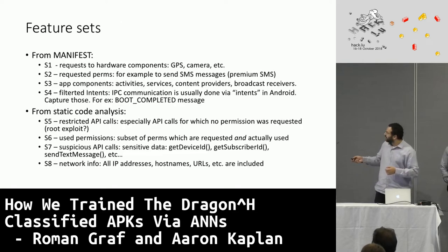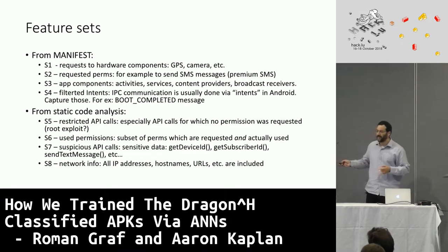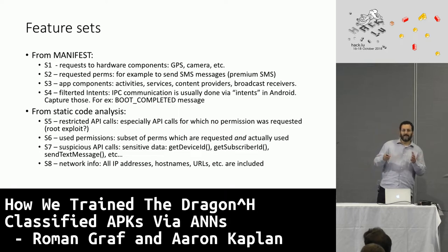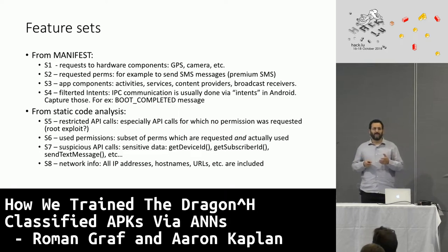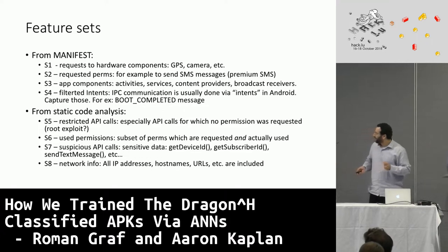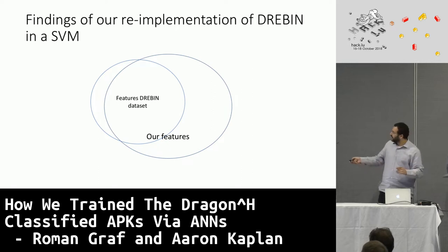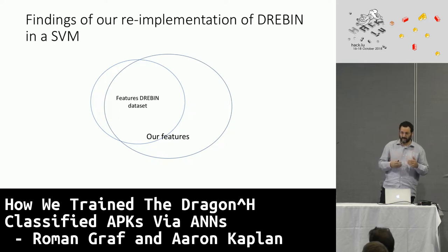Here is the proposed feature set. For example: requests to hardware components like GPS and camera — maybe a game needs that, maybe a note-taking app does not need the camera. Then requests for permissions, such as sending SMSs to premium SMS numbers, et cetera. The feature set in our work had way more features than the original Drebin paper. We tried to play around with more features to detect more, though the lesson is this is sometimes useful, sometimes not — it's really a balance.